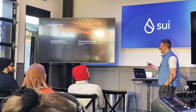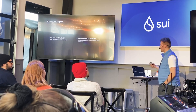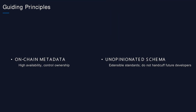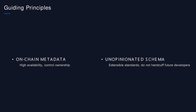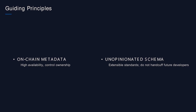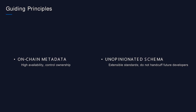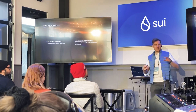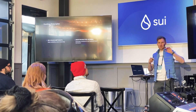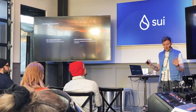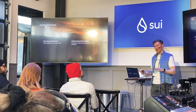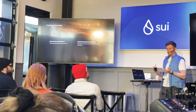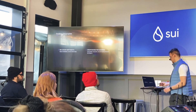So now we arrive at our two guiding principles around capsules: we want on-chain metadata because it's highly available and we can control who can edit it, and we want unopinionated schemas. I don't want to force people to have a name, an image, these specific attributes. I'll leave that to you — I'm just going to give you the tools for creating data and managing ownership of your stuff.